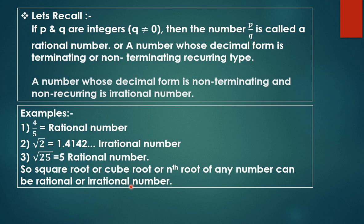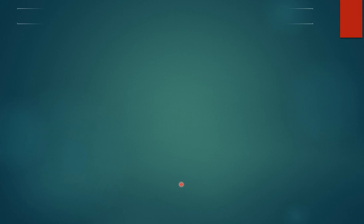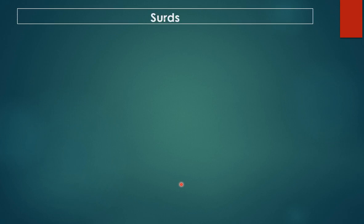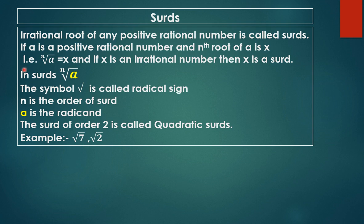Our next topic is surds. In simple terms, a surd is the irrational root of a number. More precisely, the irrational root of any positive rational number is called a surd. If a is a positive rational number and the nth root of a equals x, and x is an irrational number, then x is a surd.